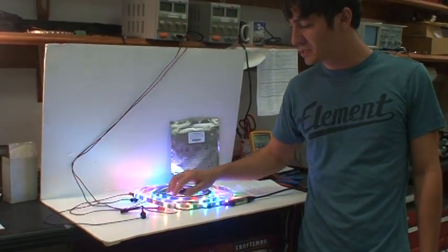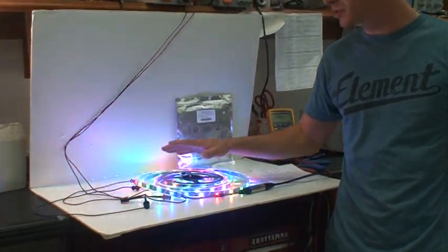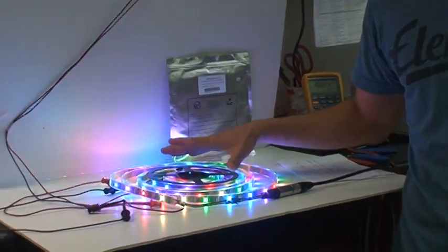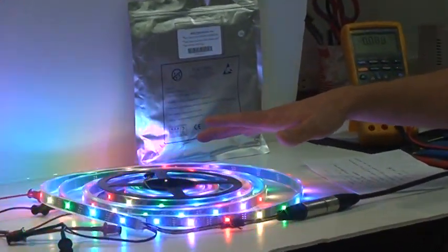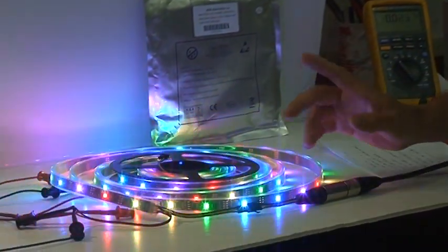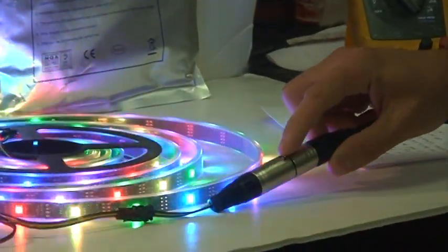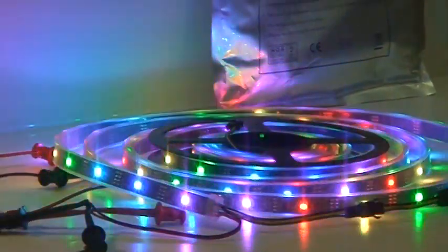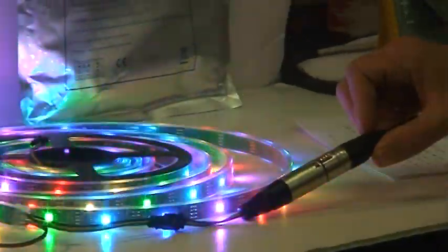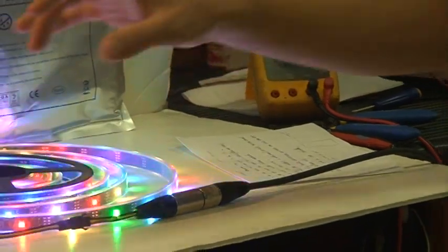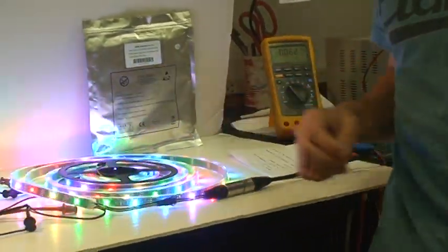This strip has individual pixel control with a total of 120 pixels in the 5 meters. This strip is very special because it has a direct DMX signal plug-in without the need of any interface. All you do is plug in your 3-pin XLR DMX cable and your power supply on the ends of the strip.